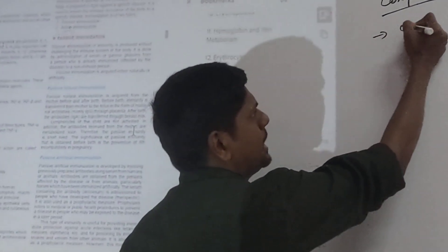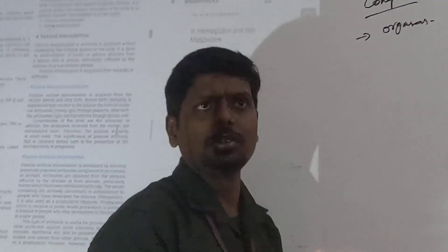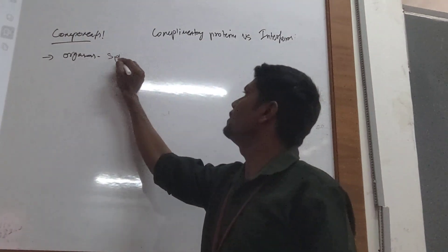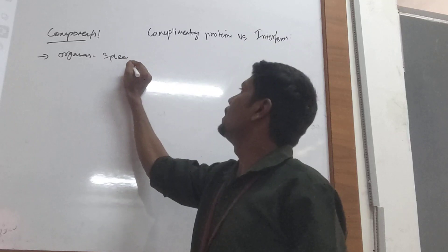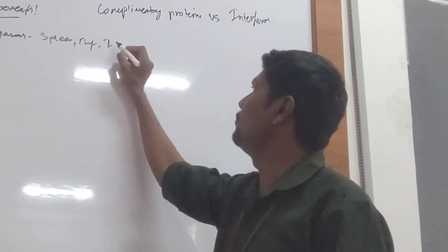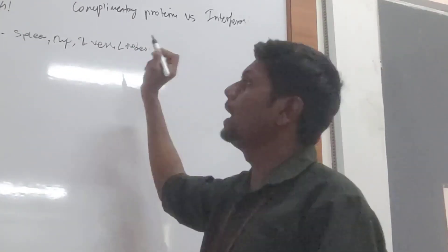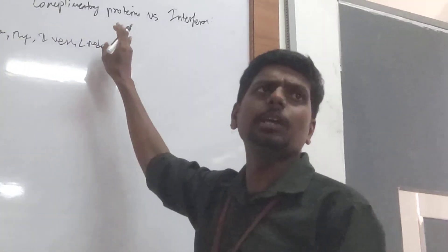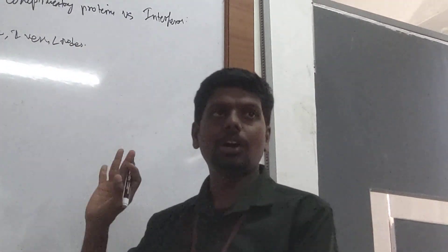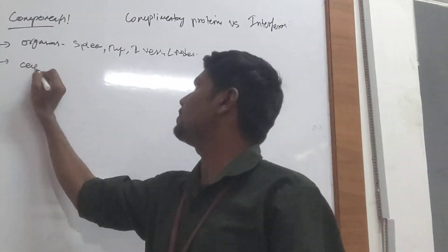So first you will say organs. What are the organs present in the immune system? We have spleen, thymus, then we have lymphatic vessels, then lymph nodes. There are multiple types of lymph nodes. These are all organs.